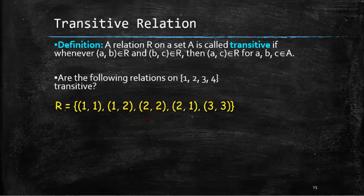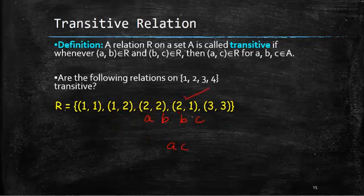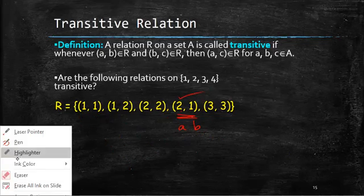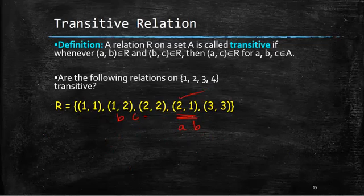Now let's take the next ordered pair as A, B. If this is A, B, this can be our B, C. Then we have to check for A, C, which will be (1, 2). This ordered pair also satisfies it. Then if we take (2, 1) as A, B, and (1, 1) can be our B, C, then A, C will again be (2, 1), which is present. Also if we take (2, 2) as A, B, and (1, 2) as B, C, then our A, C will be (2, 2), which is also there. So similarly, if (A, B) is in R and (B, C) is in R, then (A, C) is also in R for the first four ordered pairs.